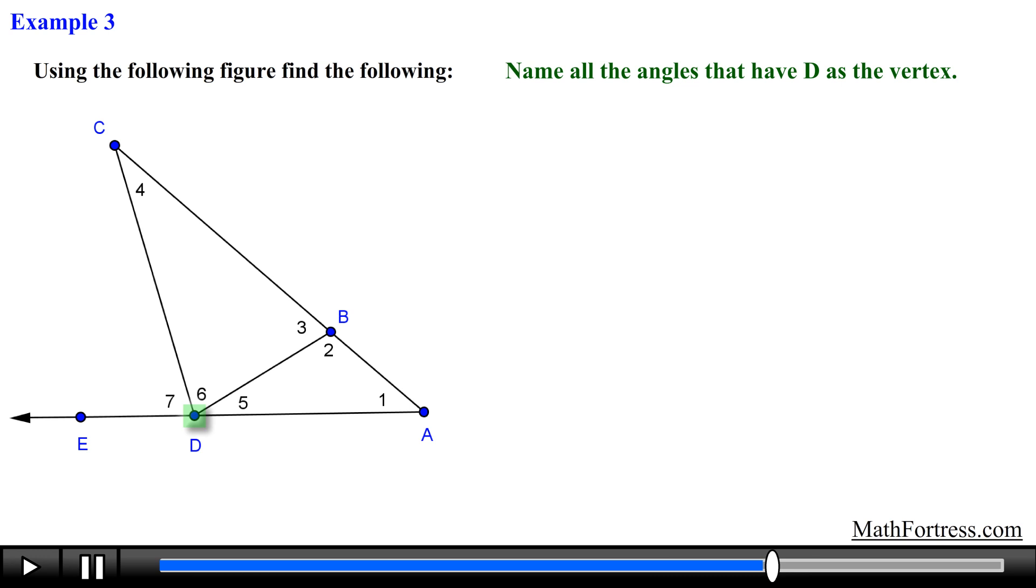They include angle 7 which can be named as angle EDC or angle CDE, angle 6 which can be named as angle CDB or angle BDC, and angle 5 which can be named as angle BDA or angle ADB. These three angles are the obvious angles that have D as the vertex. But it turns out that there are three additional angles that contain point D as the vertex.